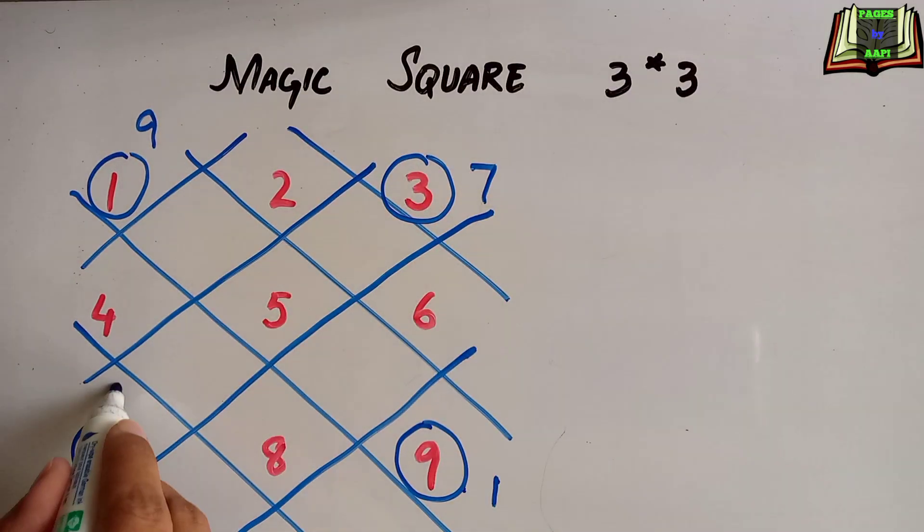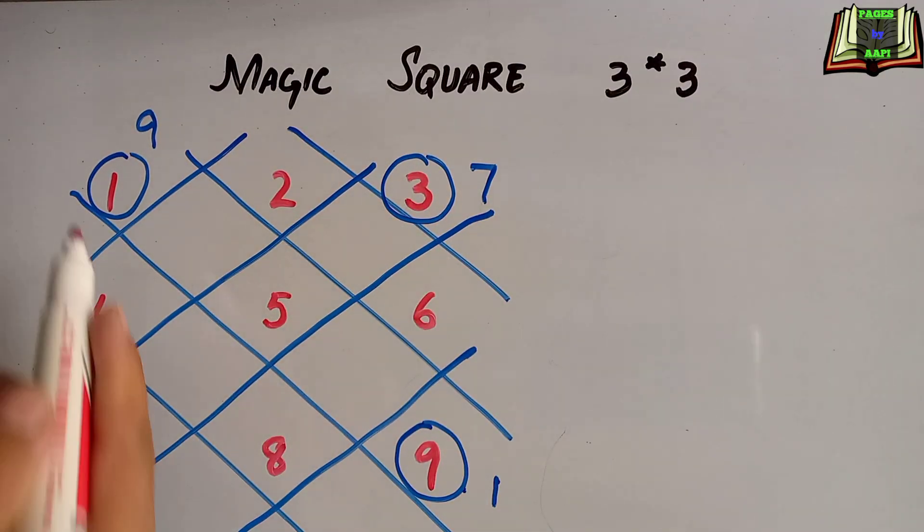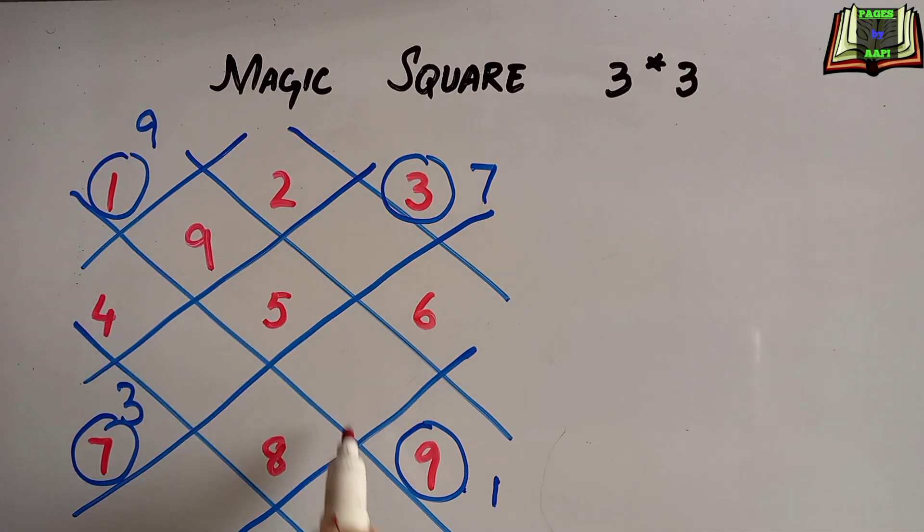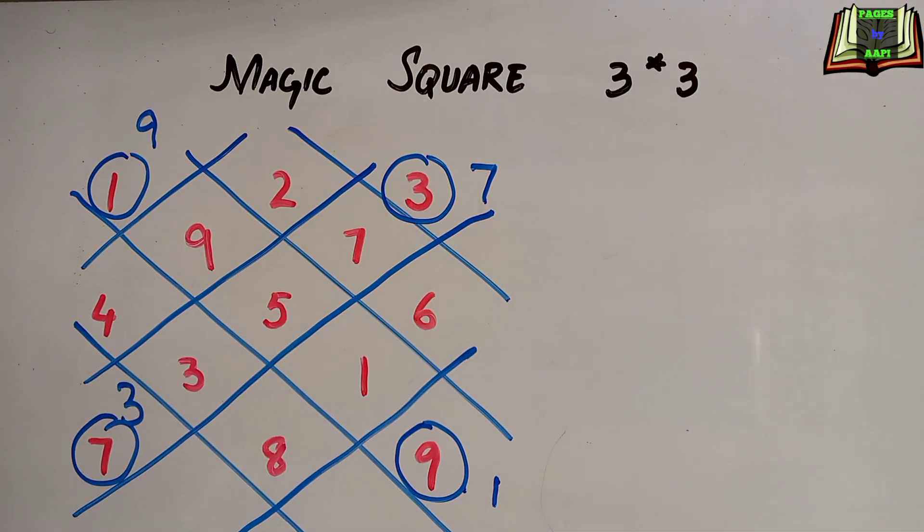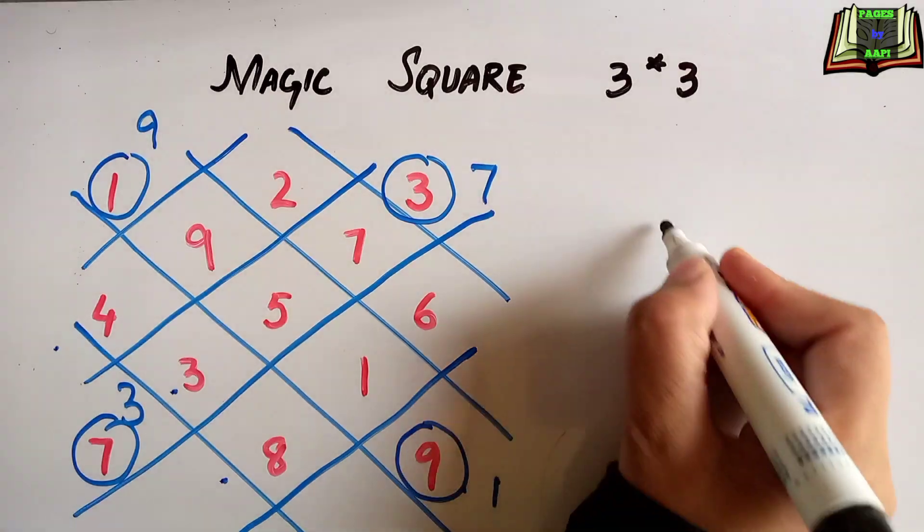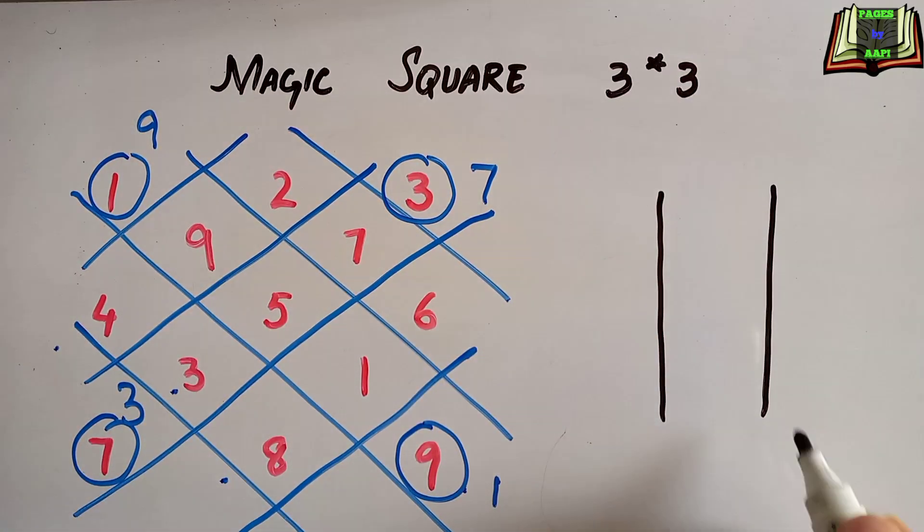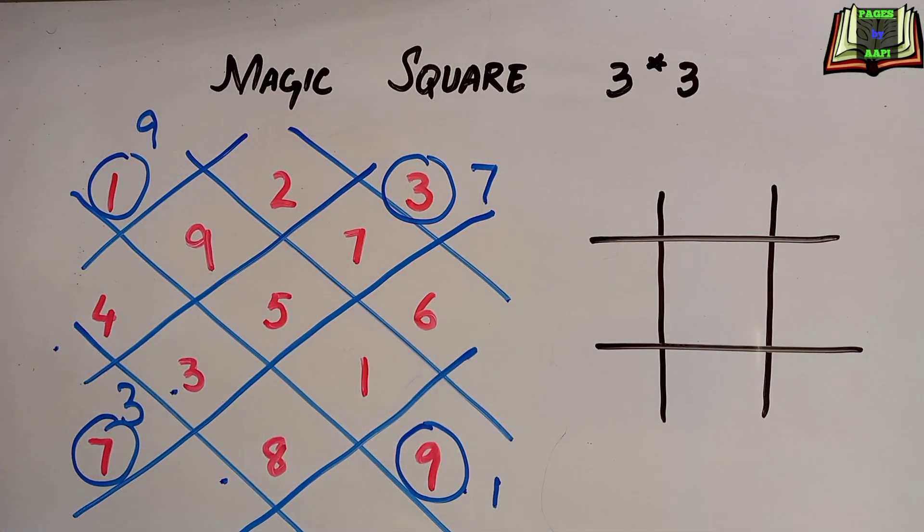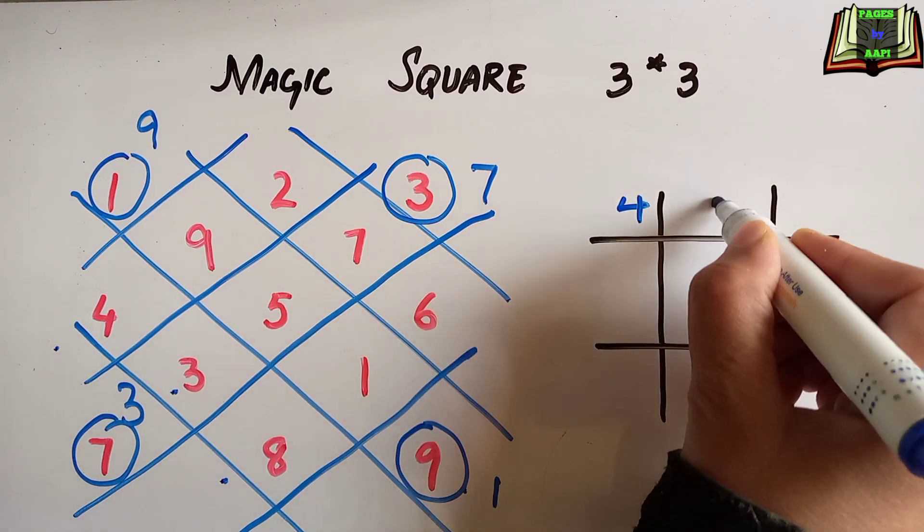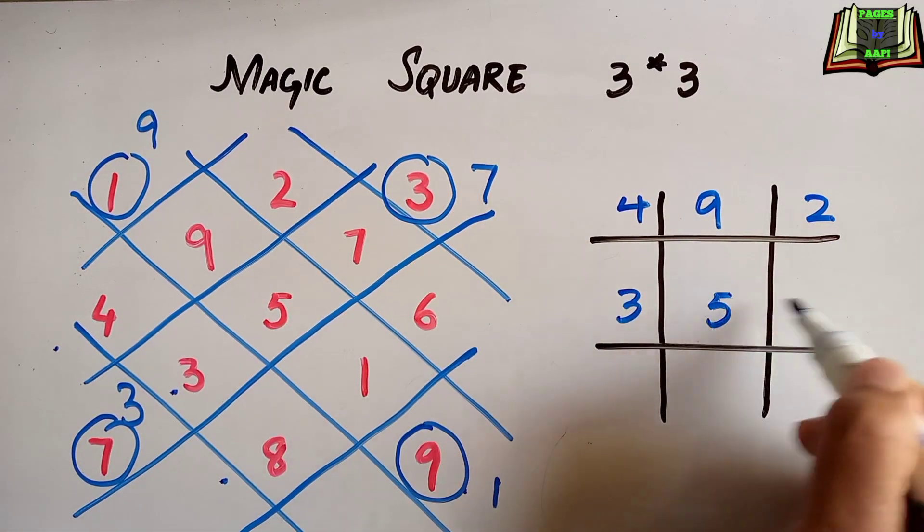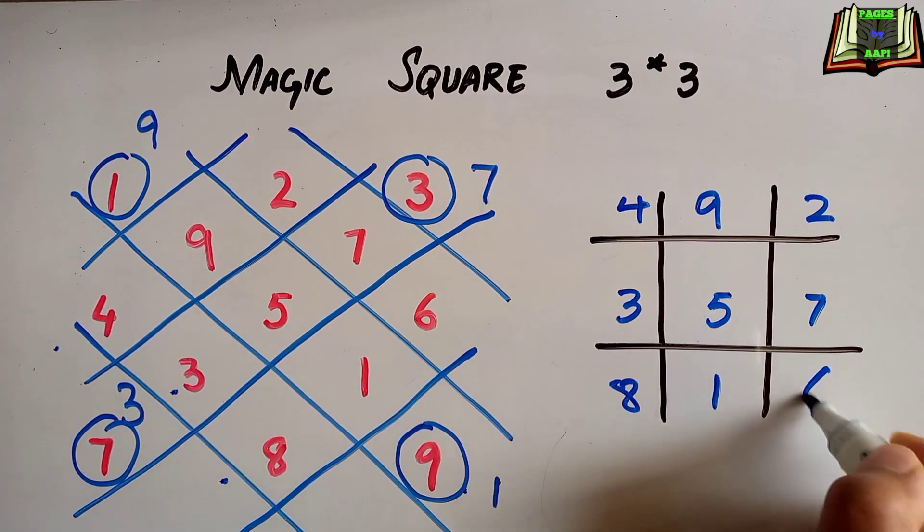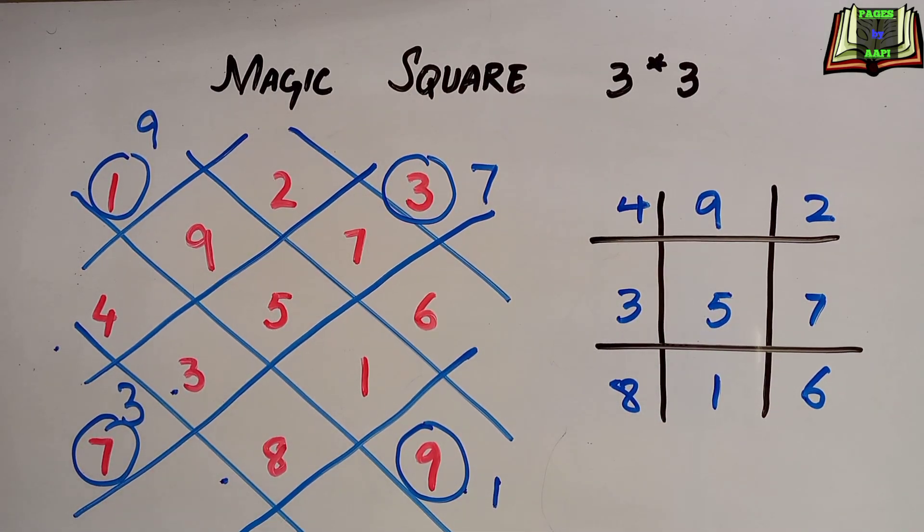Now I'm going to write the swapped numbers in the missing boxes: 7 there and 3 here. This will be the first row, this will be second row, and this will be the third row. I'm going to write it in the square: 4, 9, 2, 3, 5, 7, 8, 1, 6. We have arranged the numbers in the square.